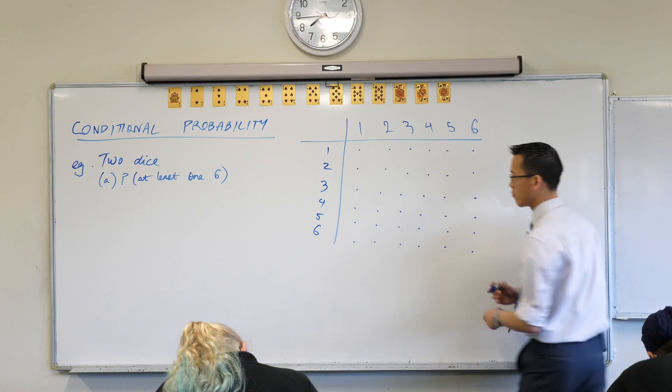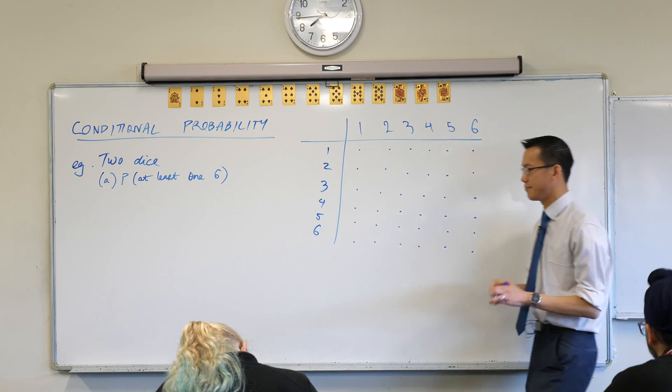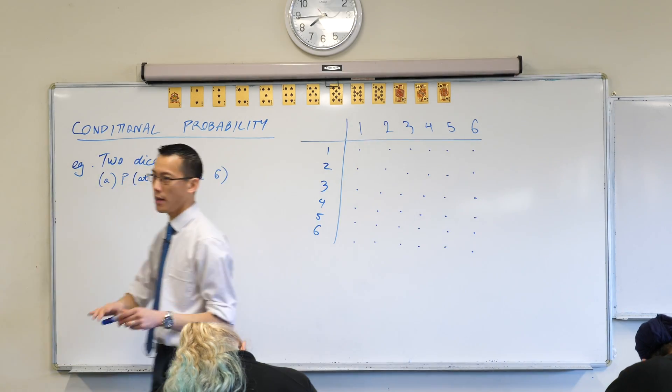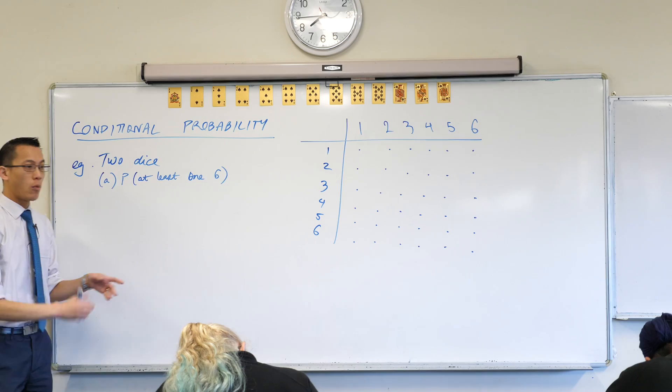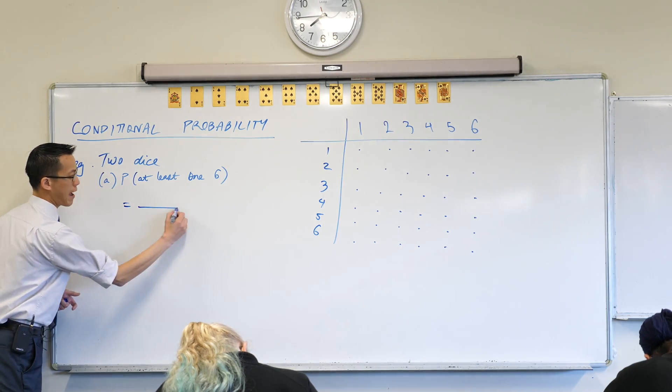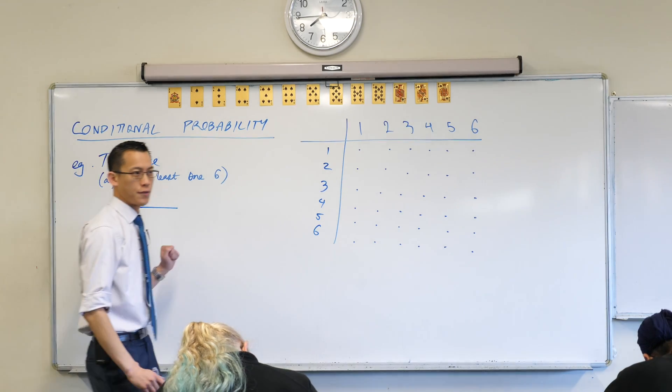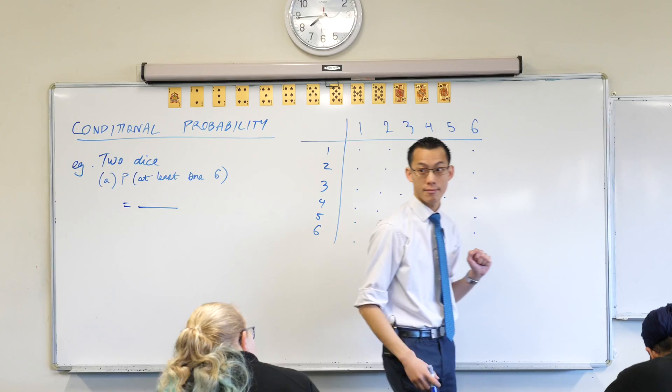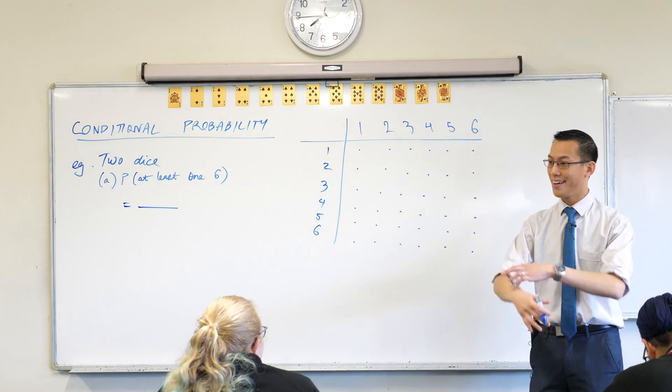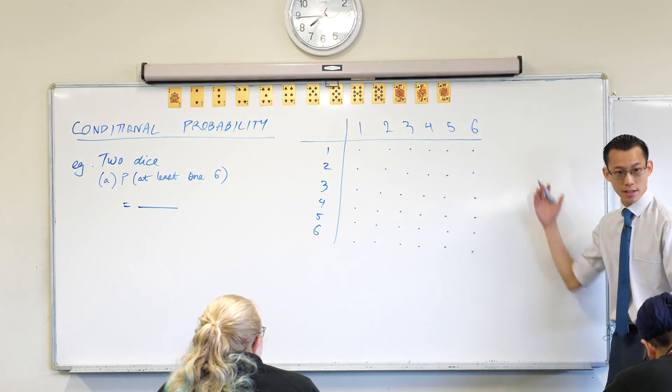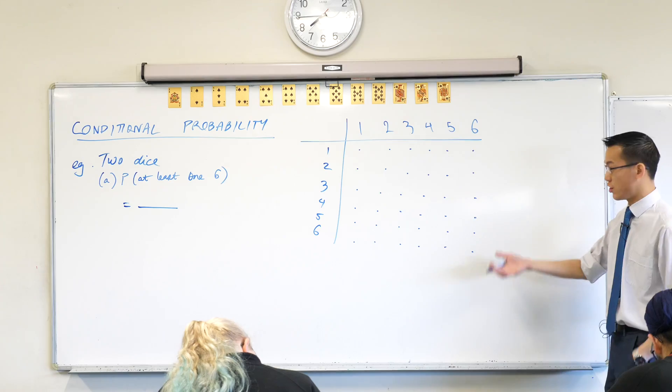When we think about probability in general, we're always thinking about a fraction. What's on the denominator of the fraction? That's the easy part. It's the size of the sample space, all of the events that could happen. And what's lovely about an array is it just tells you right there what the sample space is, what the size of it is, how many dots there are.